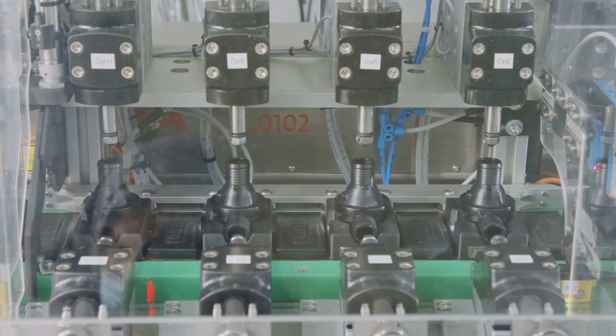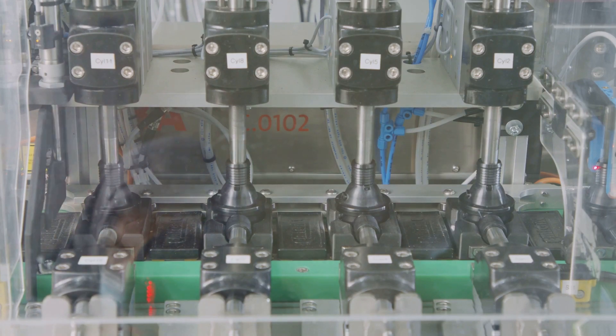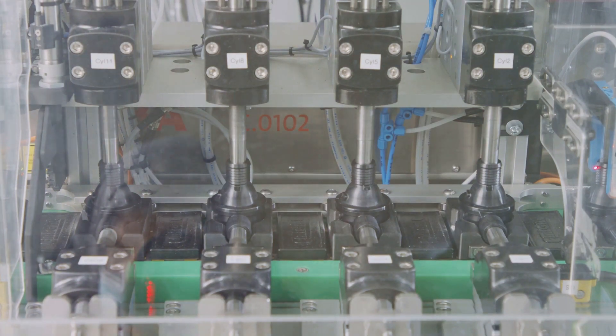Actuators are the muscle of a robot. They convert energy into motion, allowing the robot to move, grasp, and manipulate objects. This could be anything from wheels to mechanical arms depending on the robot's purpose.